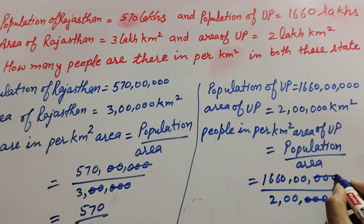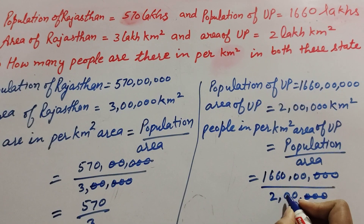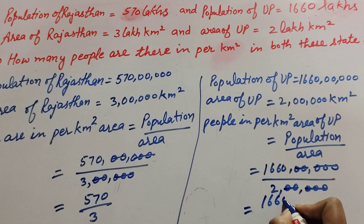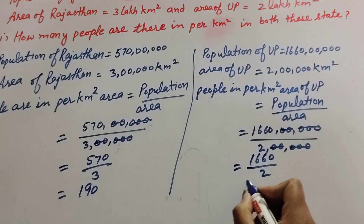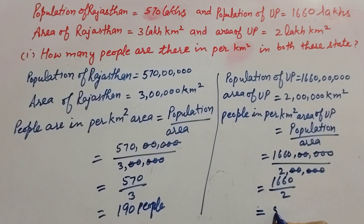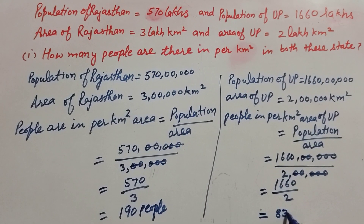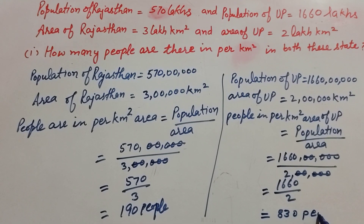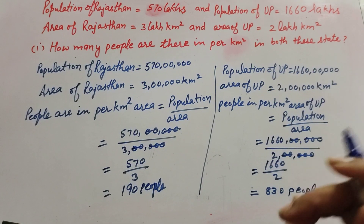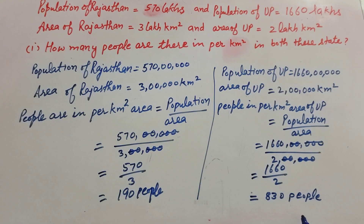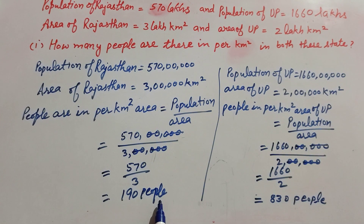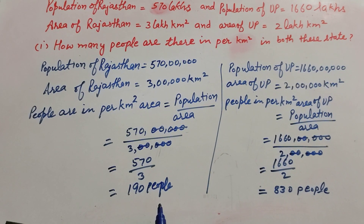Now the lakh in the denominator and lakh in the numerator are both cancelled. It is equal to 1,660 divided by 2. On dividing we get the answer 830. So 830 people live per kilometer square area of Juppies, and 190 people live per kilometer square area in Rajasthan.